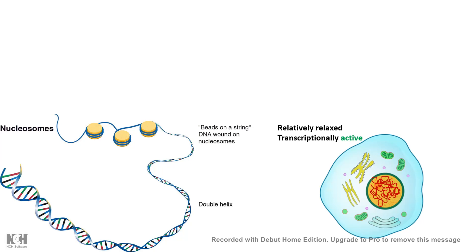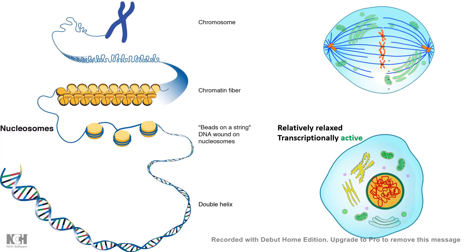The nucleus is transcriptionally active in interphase, where the chromatin landscape is relatively relaxed. However, when cells need to segregate their chromosomes, they are in a rush hour and need to pack their DNA properly. At that stage, the metaphase chromosome is highly condensed and transcriptionally inactive — no transcription happens from a compacted metaphase chromosome.